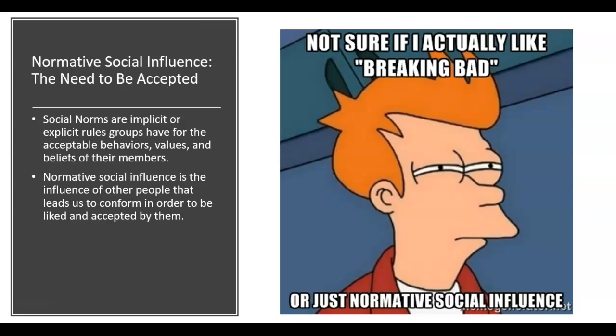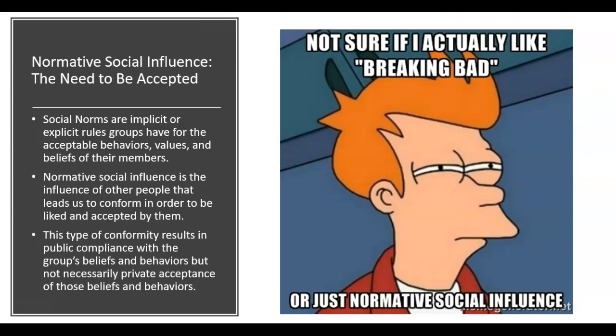Normative social influence is the way in which these norms—these expectations—shape our behavior due to the fact that we prefer not to be disliked by groups that matter to us. The studies in this section of the chapter will show how researchers have investigated this phenomenon and what its limits are.